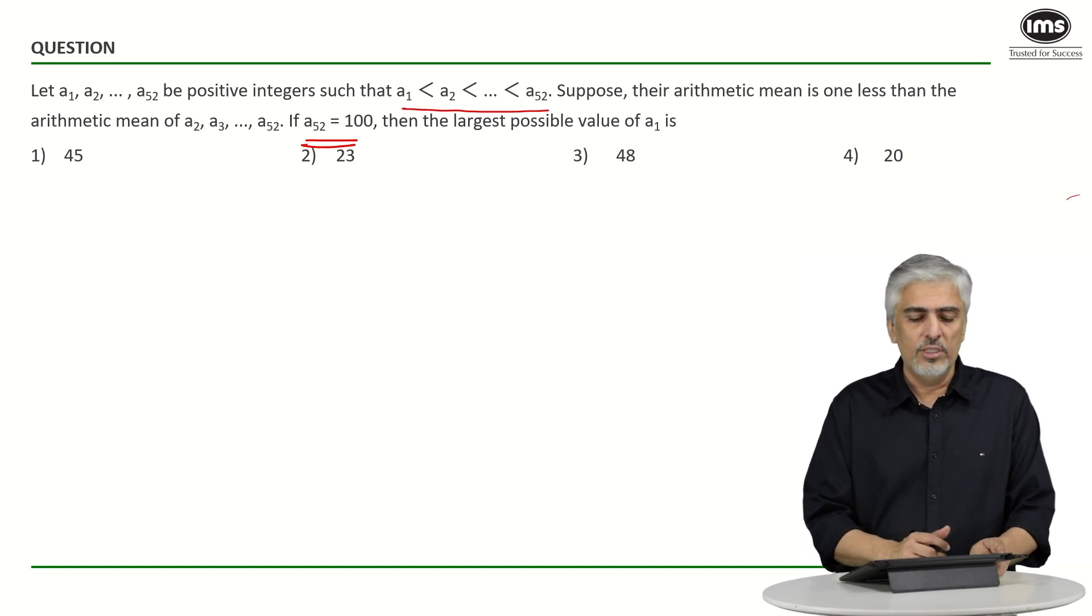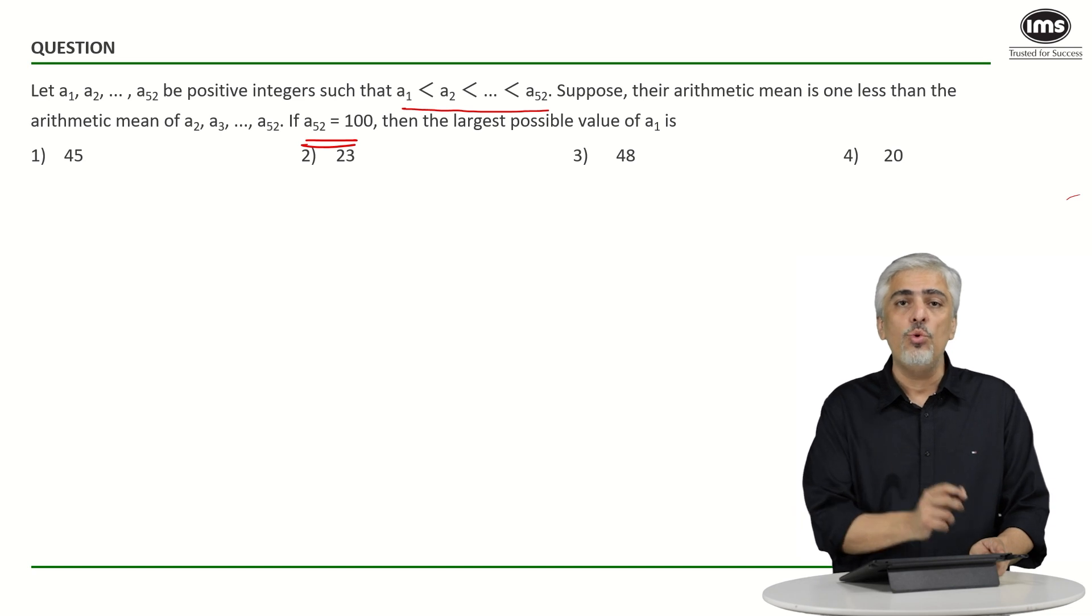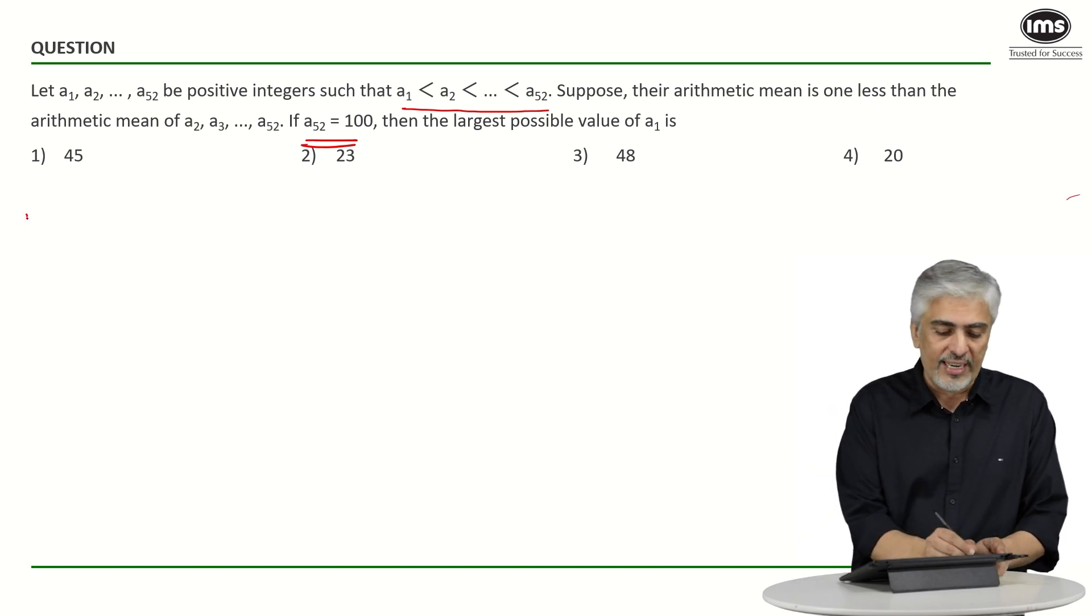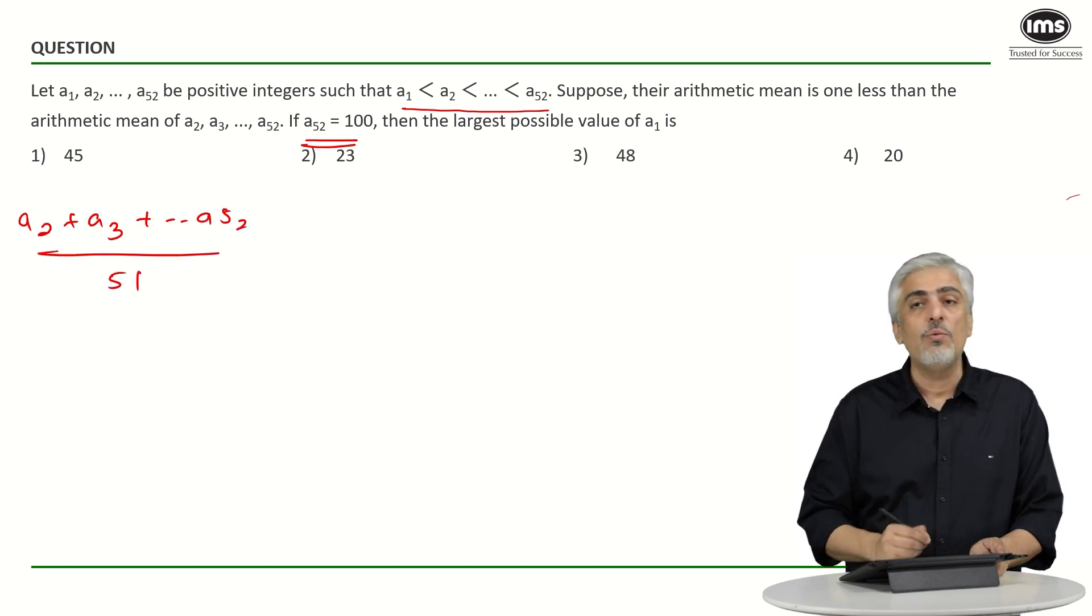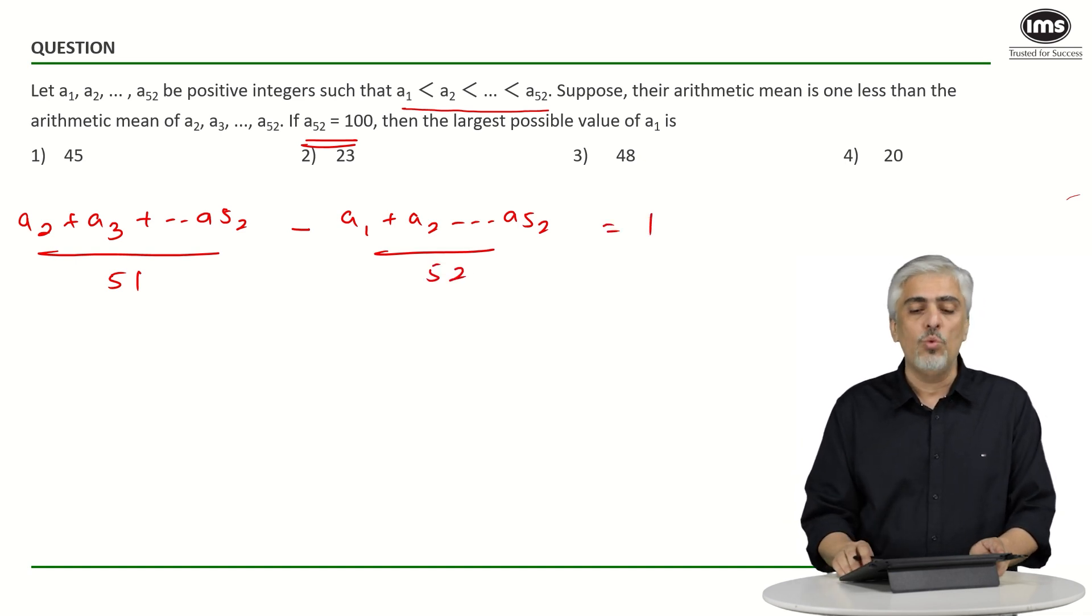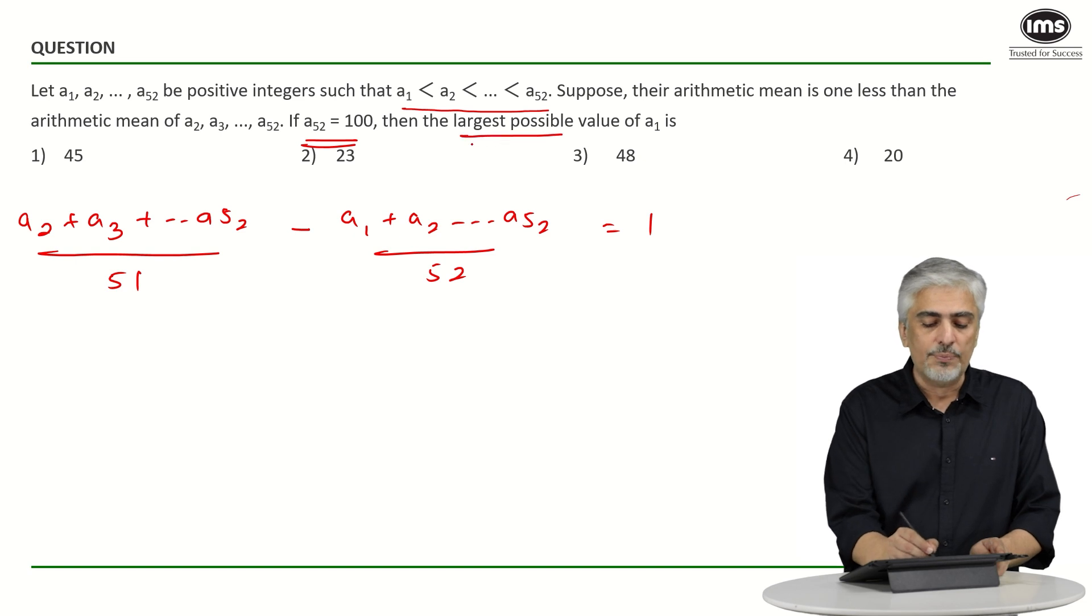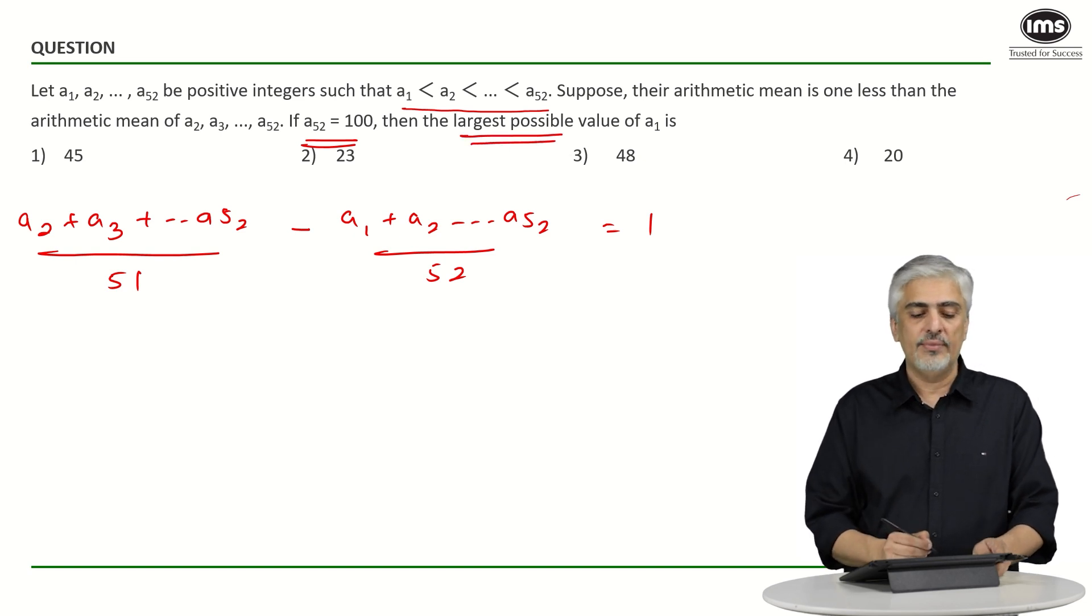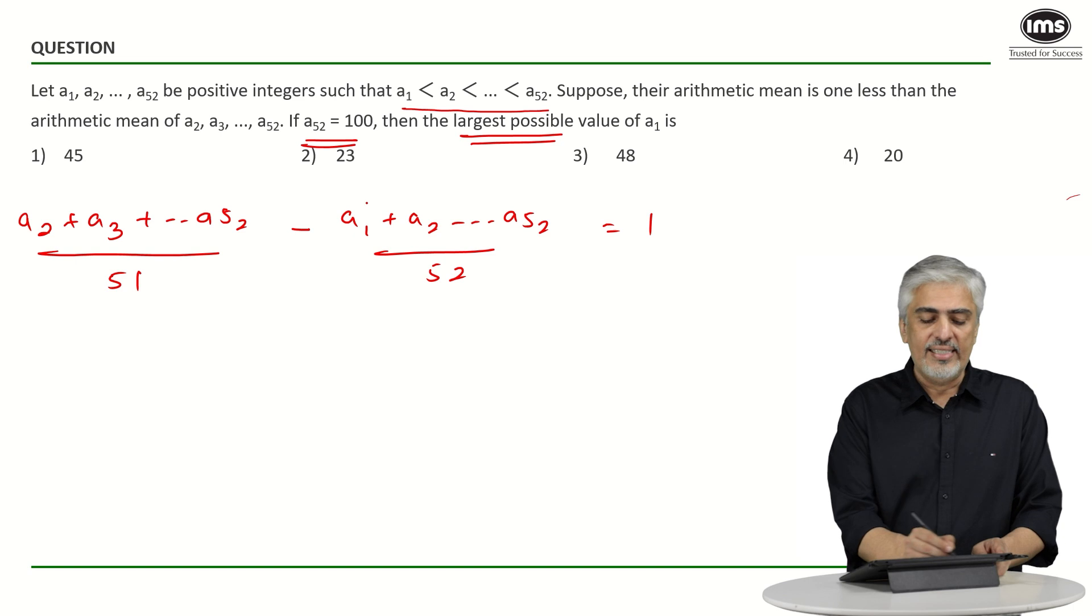What have they told us? When I take the series from a2 till a52, that means if I take a2 plus a3 up till a52, their average, so this will be 51 terms divided by 51, is 1 greater than the average of a1 plus a2 up till a52, which means divided by 52. The difference was 1, right. And they told us a52 was 100. What is the largest possible value of a1?